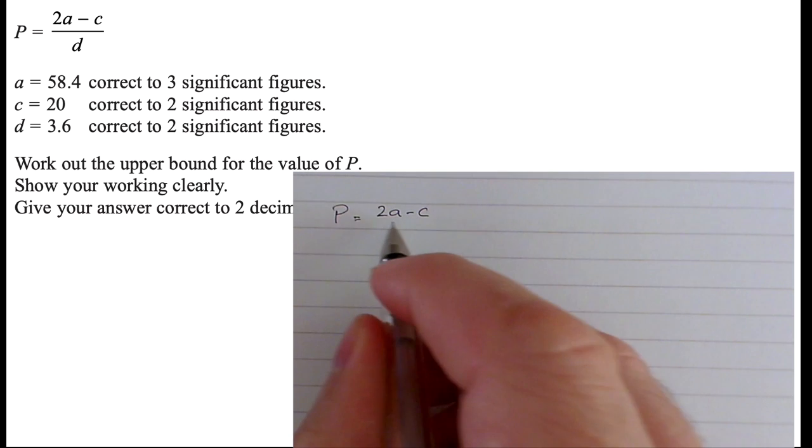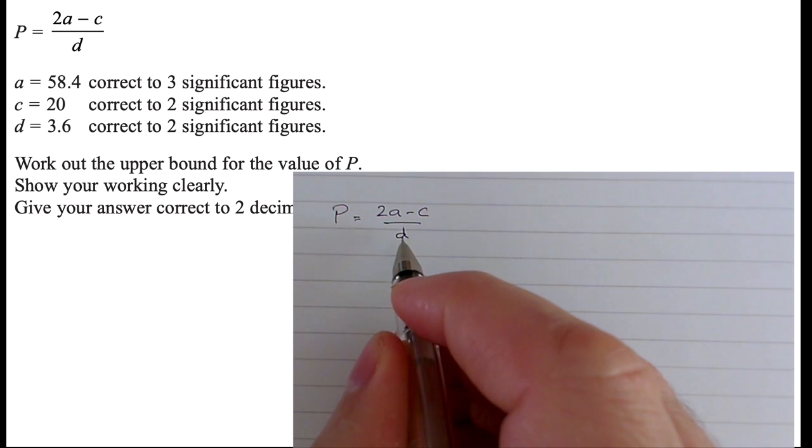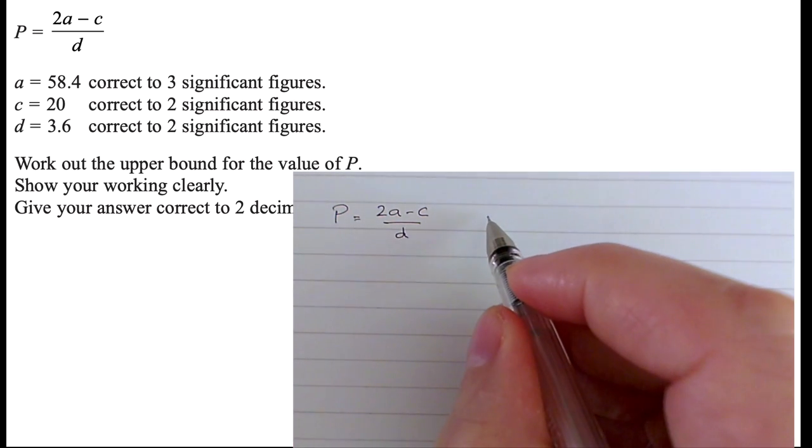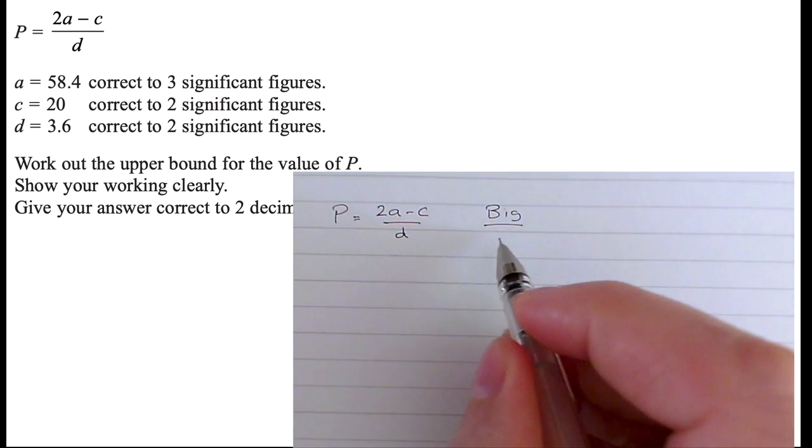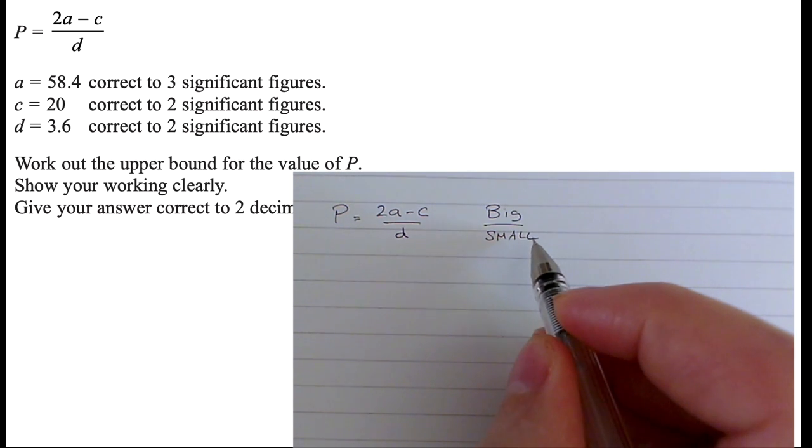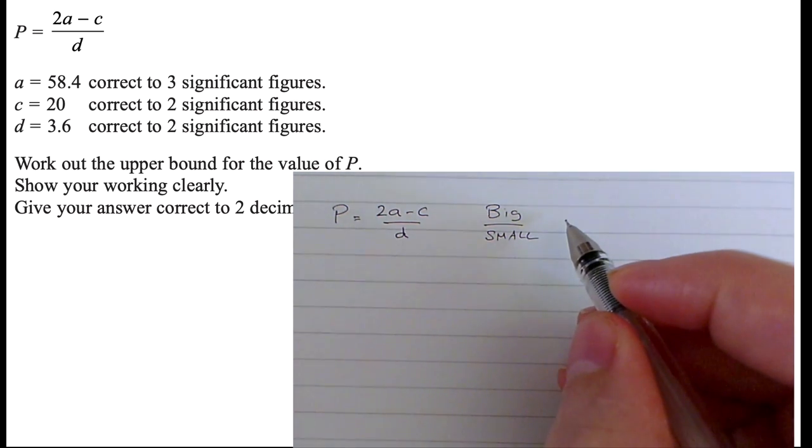So I'm going to write down the question, it helps me think. I'm going to think I want to make 2a minus c as big as I can, and I want to make the denominator as small as I can if I'm looking for the upper bound for P. That will make P as large a fraction as possible.